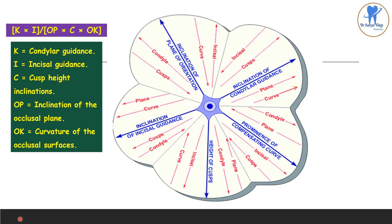This is the Hanau's sketch. I will try to discuss this in an easier way to memorize it. In this picture, it shows plane of orientation, condylar cadence, compensating curves, incisal cadence, and cusp height. According to the formula k × i / op × c × ok, that is condylar cadence × incisal cadence / cusp height inclinations × inclination of occlusal plane × curvature of the occlusal surfaces.